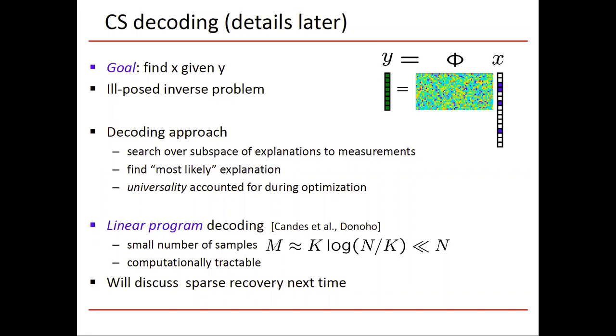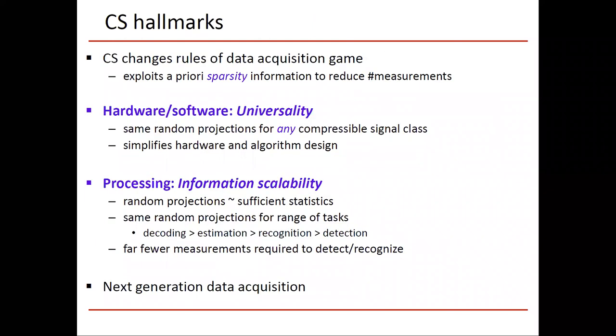Candes and Donoho and other authors showed that a linear program decoding routine, an L1 optimization which we've looked at when discussing the optimization material in this course, requires a relatively small number of samples. M is approximately k log n over k. And additionally, we've seen in the optimization material that these types of optimization problems are computationally tractable. At a later time in future modules, we're going to discuss sparse recovery in greater details.